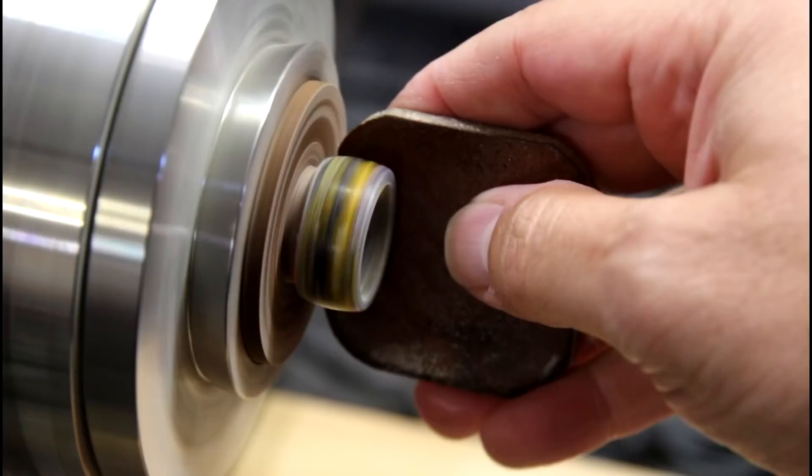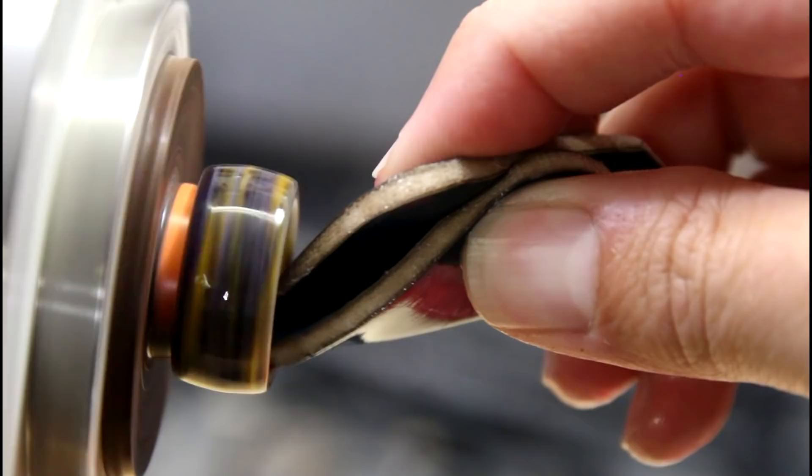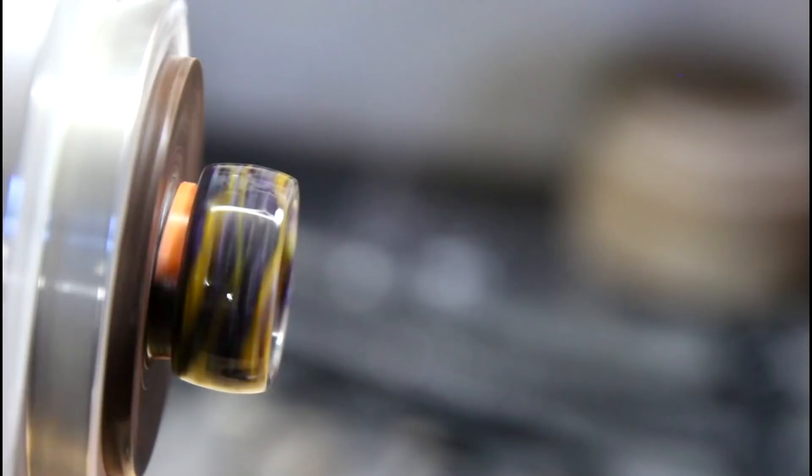My favorite polishing method is micromesh pads. It's its own grit system. Starts at 1500, goes through to 12,000. The water really helps to cut down on any dust, and keeps the pad cool so it doesn't burn the material.